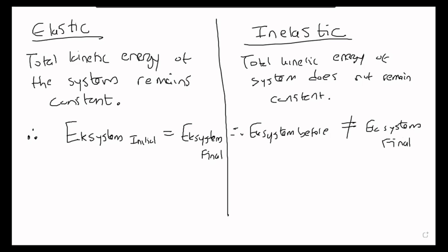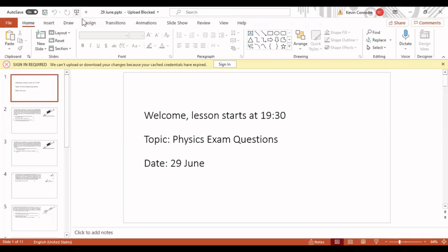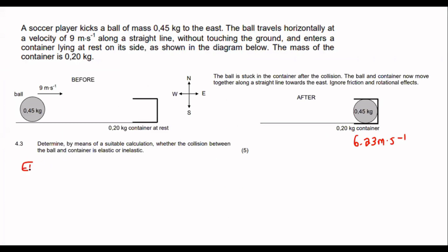So, let's quickly go tackle that question. What we need to do is calculate the kinetic energy before. So, that will be the Ek of the ball plus the Ek of the container. That's going to be a half 0.45. Remember that Ek is a half MV squared. So, that's going to be 9 squared plus a half times 0.2 is the mass. But the velocity initial is 0 because it's not moving. So, then you can go work that out as 18.225 joules. I'm not going to round off yet. It's not the final answer.